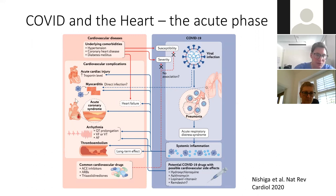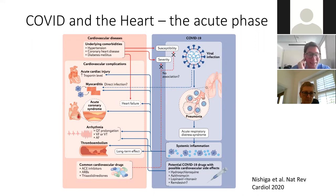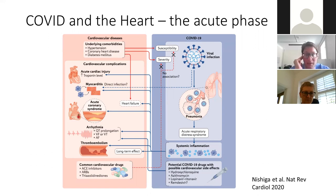There was initial excitement about whether ACE inhibitors and angiotensin receptor blockers would make you more likely to get bad COVID, due to potentially increasing expression of the ACE2 protein. I'm very pleased to say the studies have not shown this, and continuing your ACE inhibitors and ARBs appears to be safe unless you're haemodynamically unstable — which is very good news for our heart failure patients, because stopping these drugs is bad in heart failure.